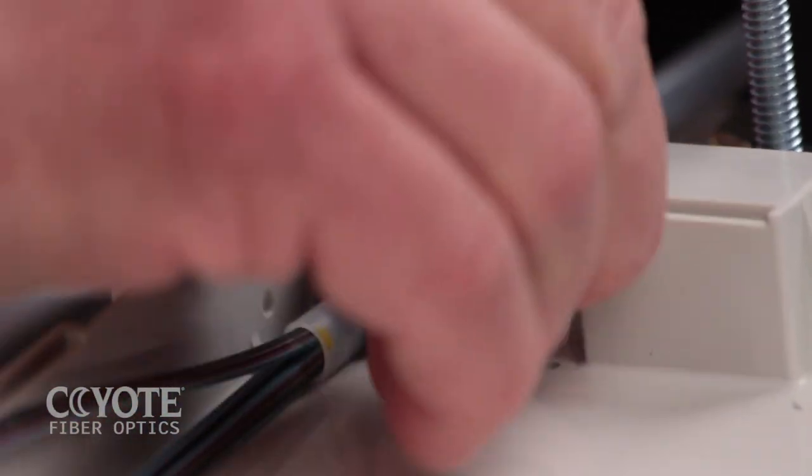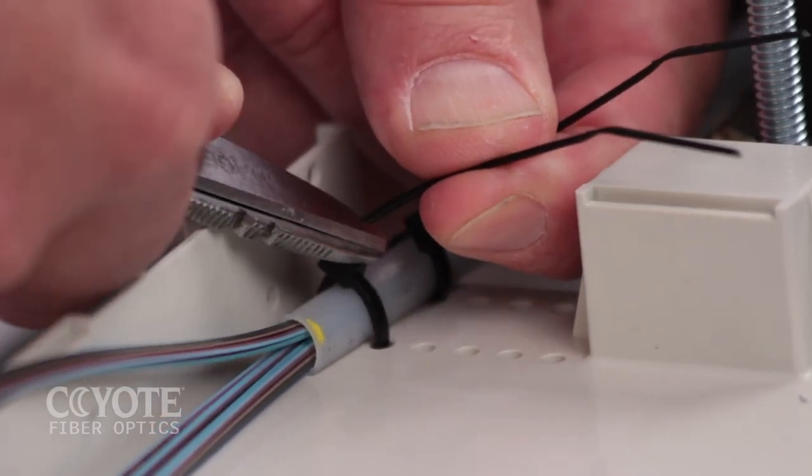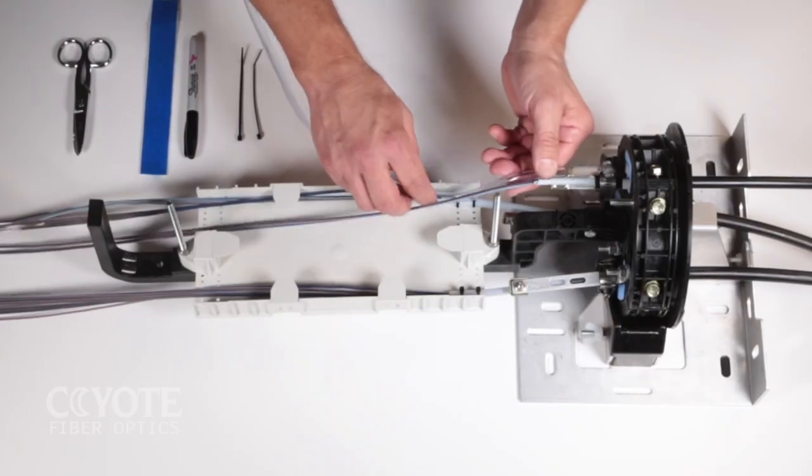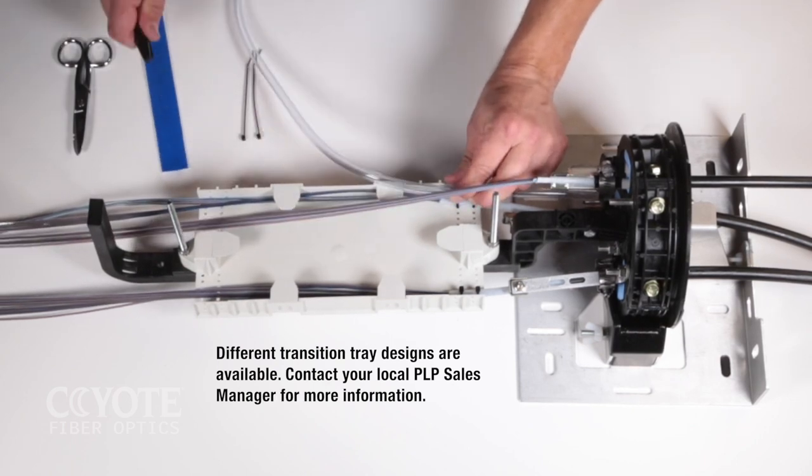Secure the core tube of the feeder cable to the transition compartment. Determine the length of transition tube that will be needed to protect the ribbon from the core tube to the transition compartment.